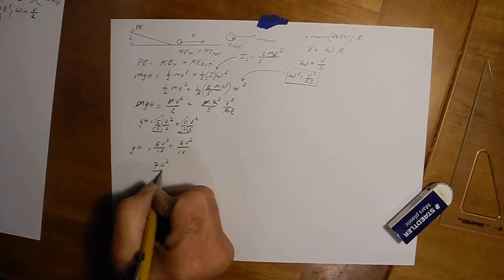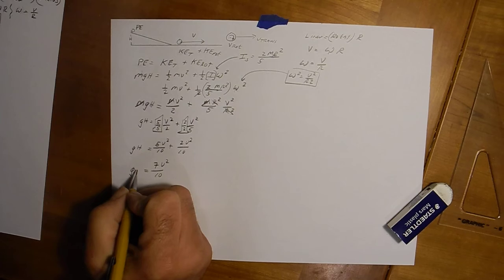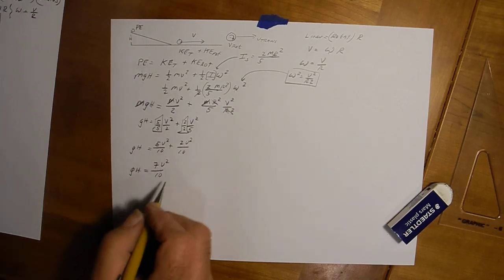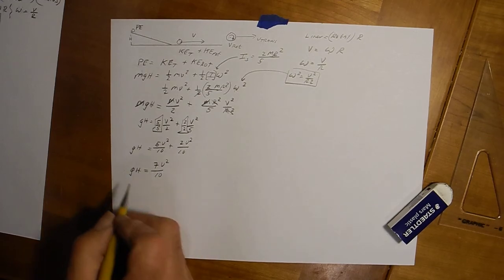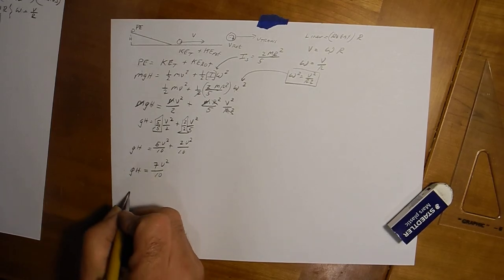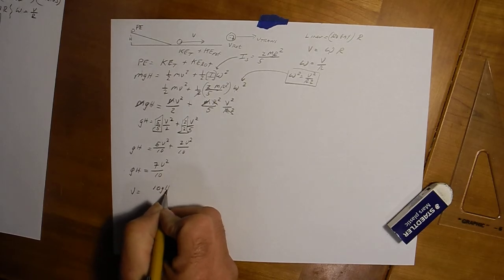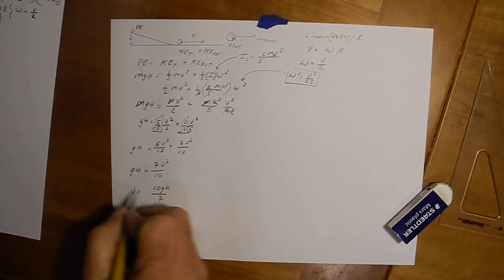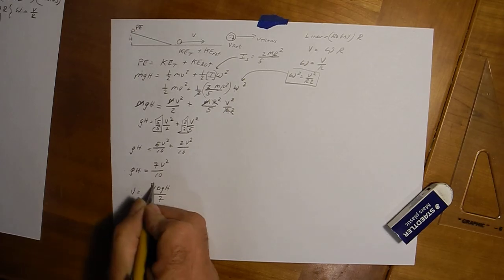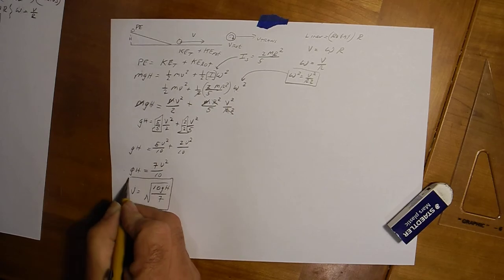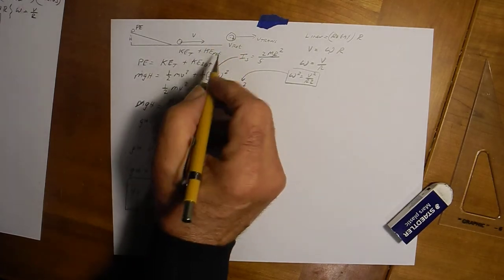And let's solve this thing for v, so we'll multiply both sides by ten and divide both sides by seven, so we have ten gh over seven equals v squared. And we'll square root both sides, and so that's the expected velocity in meters per second using the MKS system, how fast we expect that thing to roll.